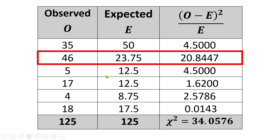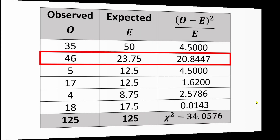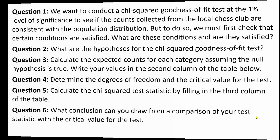Let me try to say that clearly. If the null is true, and club chess players are choosing each defense roughly in the same proportion as online players, then we would expect about 23.75 of those 125 games to have been the Sicilian defense. But in our observation we get a number much bigger — meaning at that local chess club they're playing this defense much more than the same defense is being played online. The important thing is that in the end we get a test statistic that is very large, which tells us we're probably going to reject the null hypothesis.